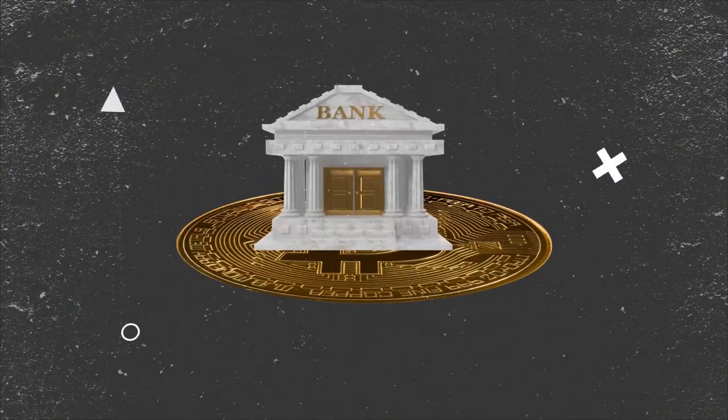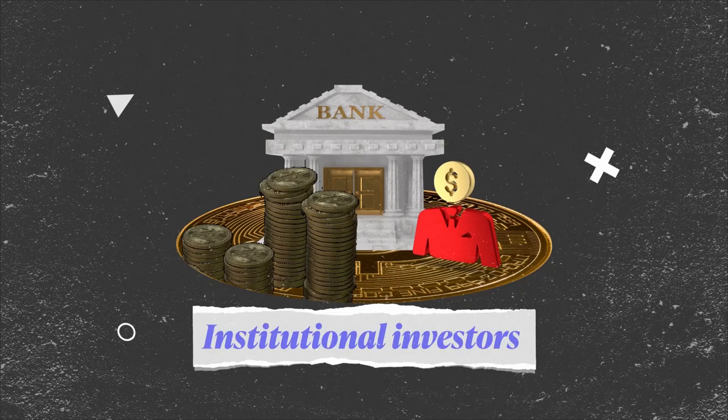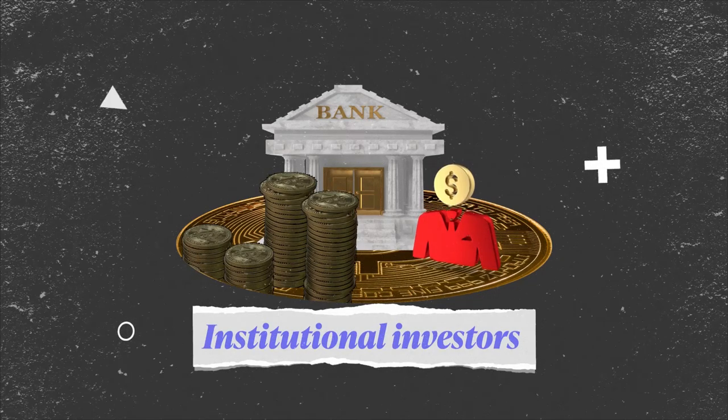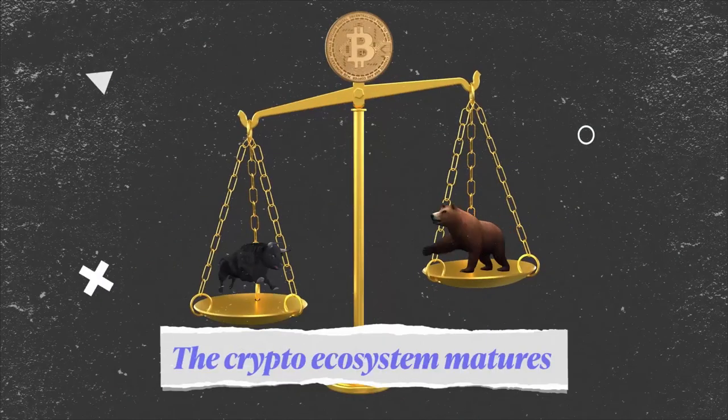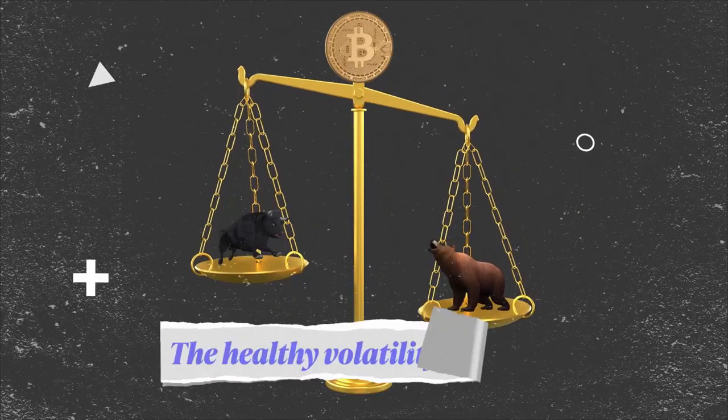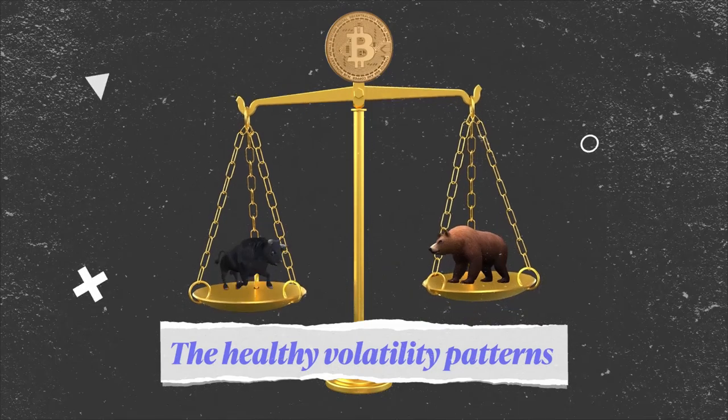As the crypto space is gaining more legitimacy, institutional investors will start taking positions with more conviction. This might make crypto markets less volatile in the long run. And as the crypto ecosystem matures, it might start resembling the healthy volatility patterns of traditional markets.